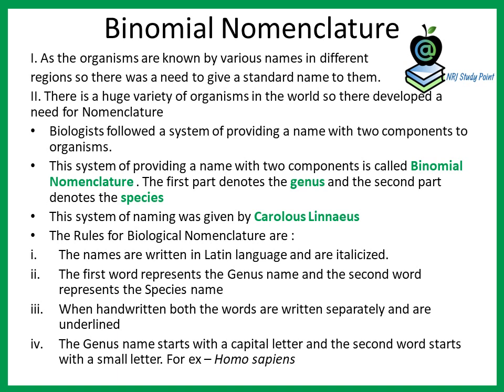The binomial system of nomenclature is a system of providing a name with two components. The first component is the genus name and the second component is the species name. This system of naming was given by Carolus Linnaeus. There are certain rules that need to be followed when writing a scientific name. First of all, the scientific name must always be written in Latin language. Latin is considered a dead language because it is no longer in use, and a living language may be modified over time, which cannot be afforded for scientific names.